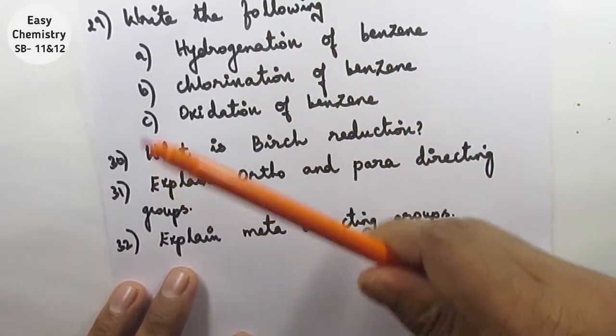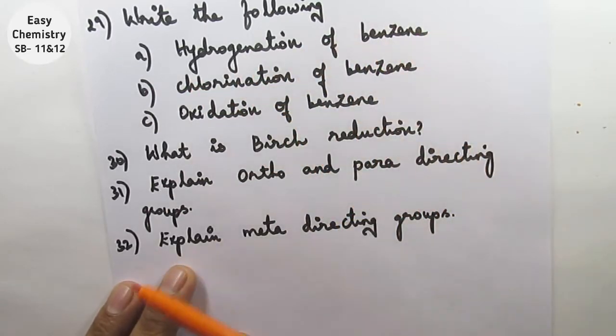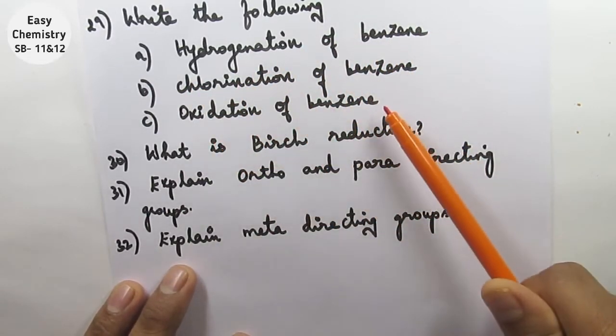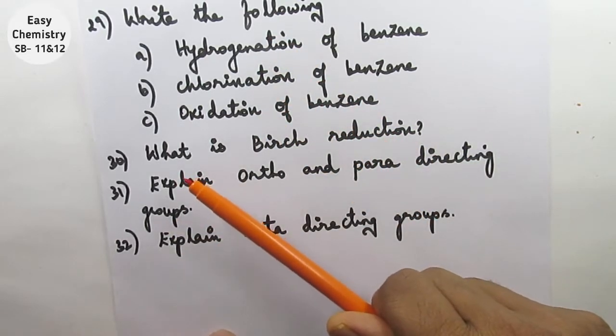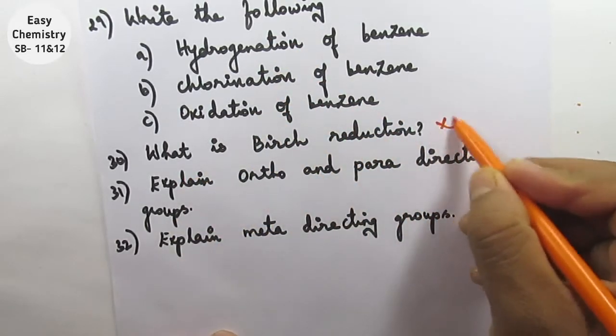Question number 29: Write the following - hydrogenation of benzene, chlorination of benzene, oxidation of benzene, so ABC. Question number 30: What is Birch reduction? This is very important, Birch reduction.